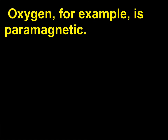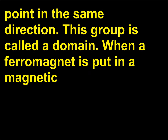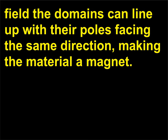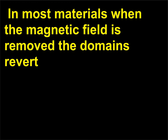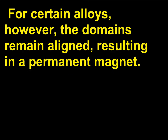Oxygen, for example, is paramagnetic. In ferromagnets, the unpaired electrons in large groups of atoms interact with each other so that they point in the same direction — this group is called a domain. When a ferromagnet is put in a magnetic field, the domains can line up with their poles facing the same direction, making the material a magnet. In most materials, when the magnetic field is removed, the domains revert to their former random directions and the material is no longer a magnet. For certain alloys, however, the domains remain aligned, resulting in a permanent magnet.